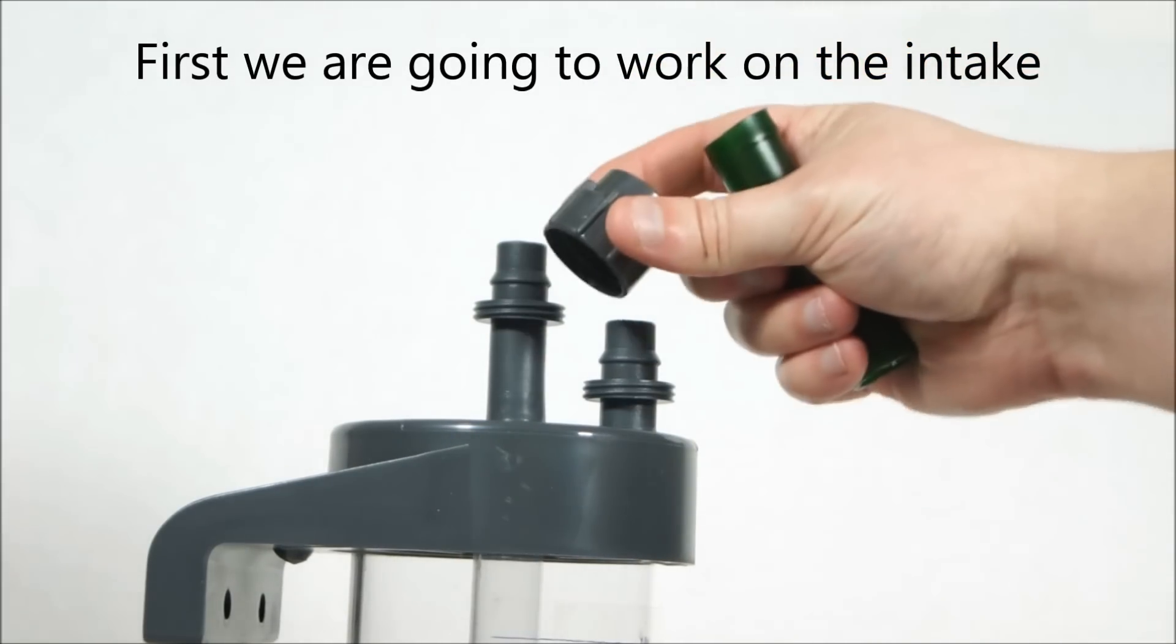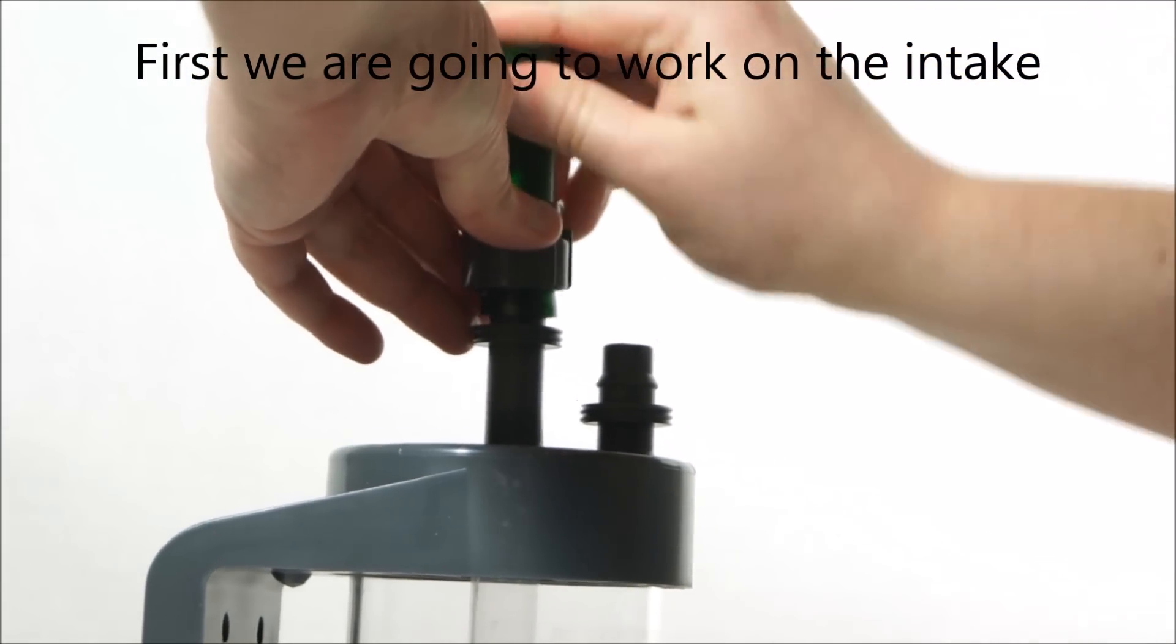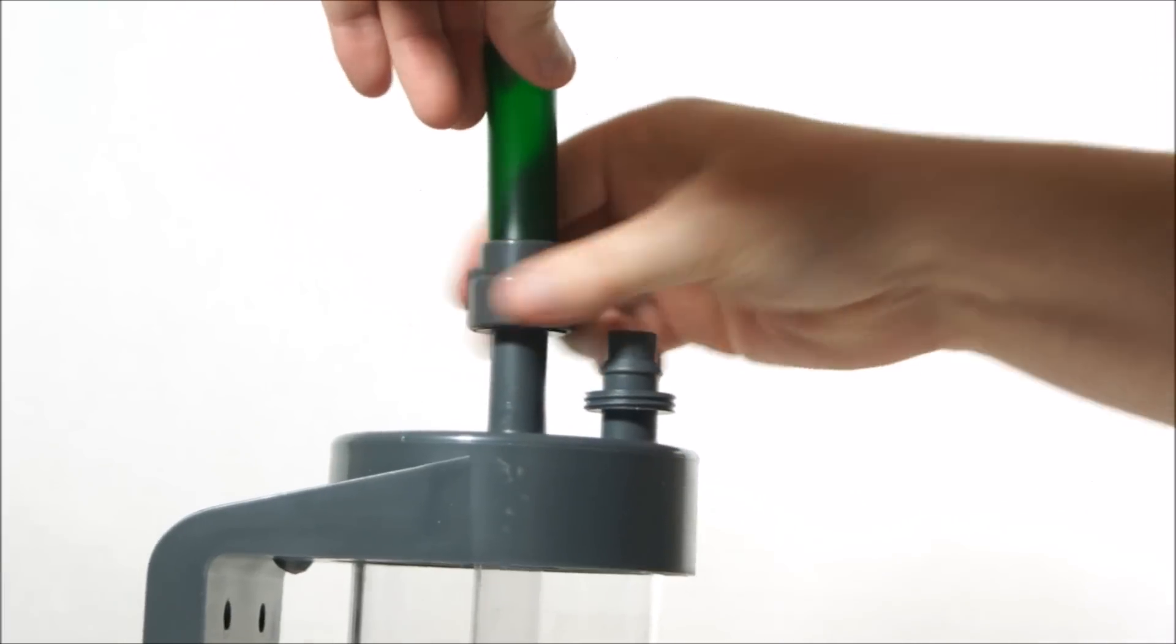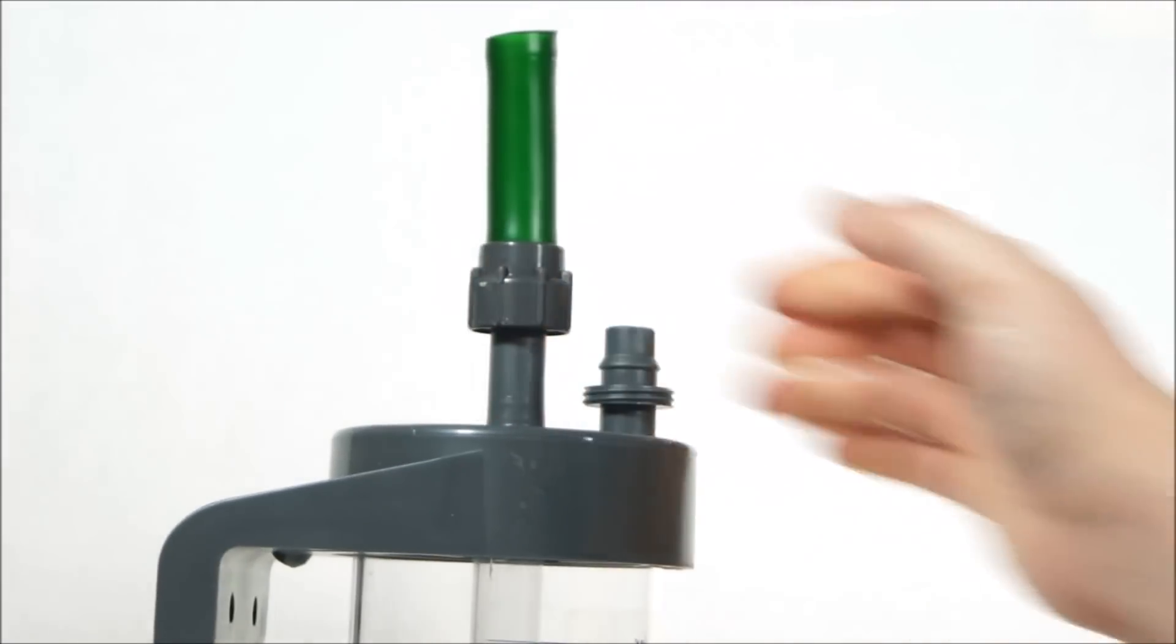First you want to cut a piece of tubing to size and secure it tightly with a hose tail lock nut. The size of this piece of tubing depends on how far the water has to travel to the aquarium or sump.